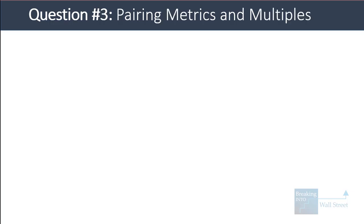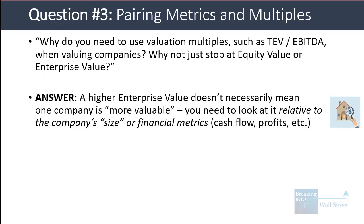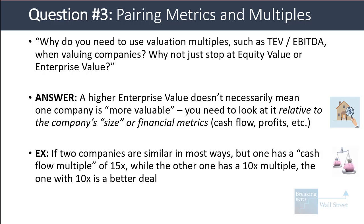If you get all that right, they might move on to the third category: how to pair metrics with equity value or enterprise value to create multiples. A typical question: why do you need valuation multiples like enterprise value to EBITDA when valuing companies? Why not just stop at equity value or enterprise value? A higher enterprise value doesn't necessarily mean one company is more valuable or expensive — you need to look at it relative to the company's size or financial metrics. If two similar companies have multiples of 15x and 10x, the 10x one is a better deal.